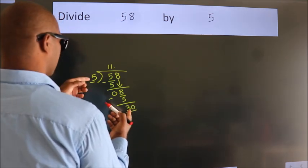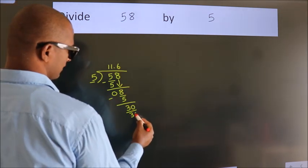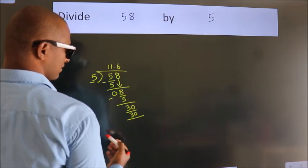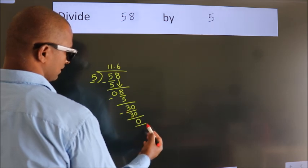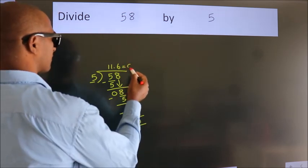When do we get 30? In the 5 table: 5 times 6 is 30. Now we subtract and we get 0. We got remainder 0, so this is our quotient.